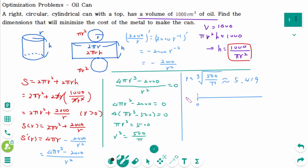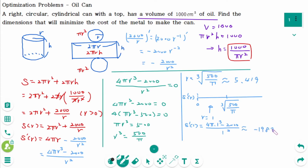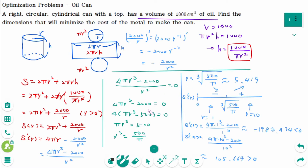On the number line where r > 0, the critical point is r = ∛(500/π). Testing r = 1: S'(1) = 4π(1)³ − 2000/(1)² ≈ −1087.434, which is less than 0. Testing r = 10: S'(10) = 4π(10)³ − 2000/(10)² ≈ 105.664, which is greater than 0. So S' changes from negative to positive at r = ∛(500/π).